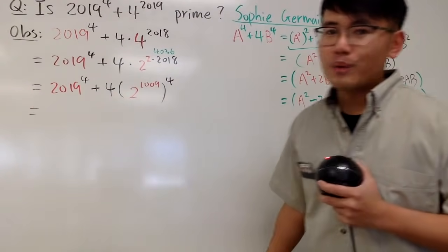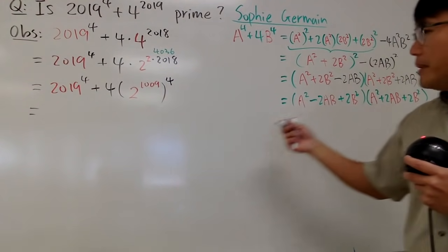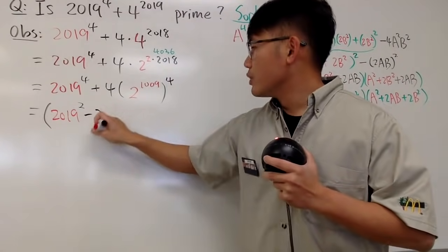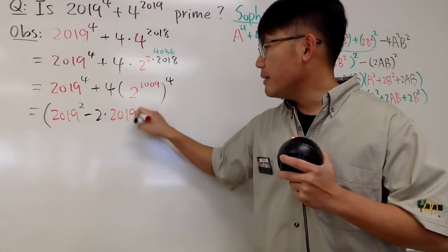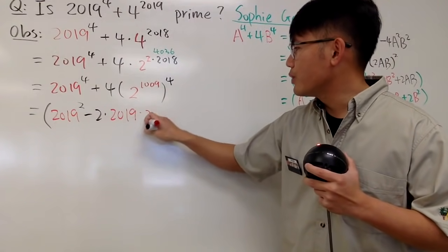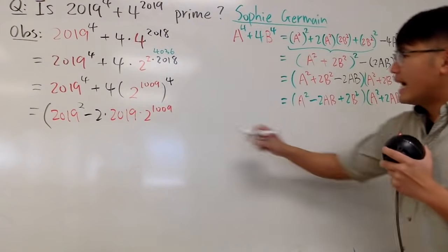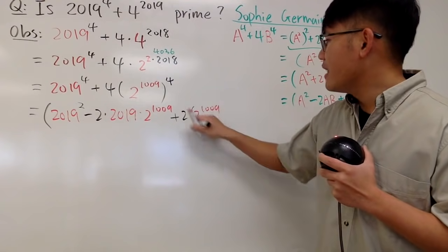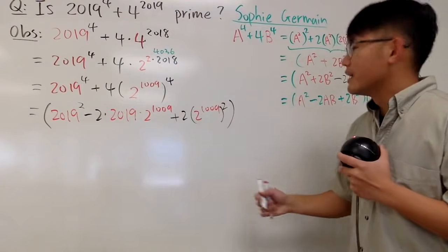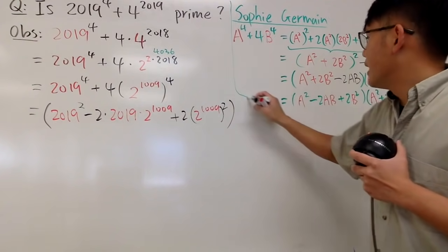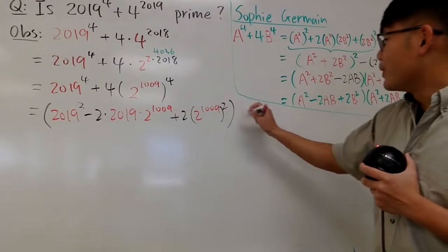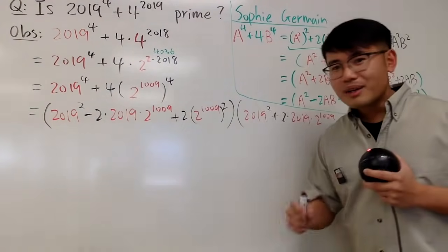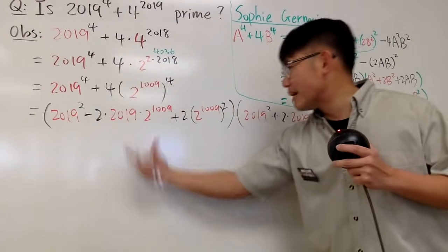And as you can see, in our situation, a is 2019, and b is 2^1009, which is really good, because now we can factor it by just using this identity. So let's take a look at what we end up with. Well, as we can see, we have a^2 - 2ab, so let me just write it down right here. a is 2019, so we have 2019^2, and then minus 2 times a and b. So we have 2019 times this right here is the b. So we put down 2^1009. And then we add 2b^2, which is this thing squared. Let me just write down (2^1009)^2. And this right here is the first factor. And then let me just kind of like box this, because I kind of run out of space, my bad.